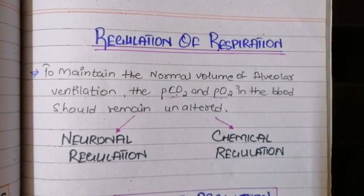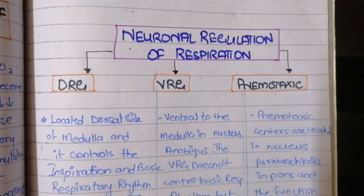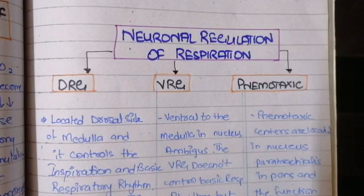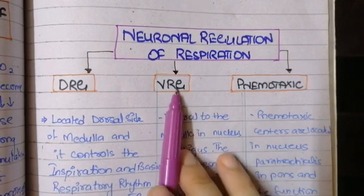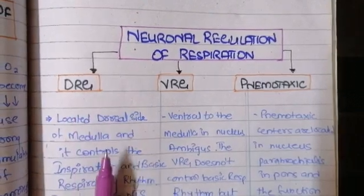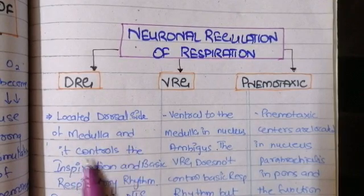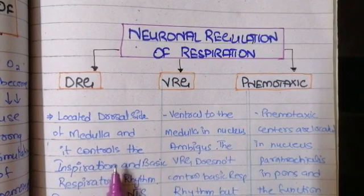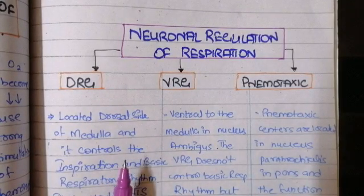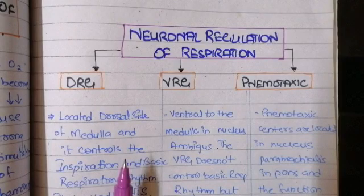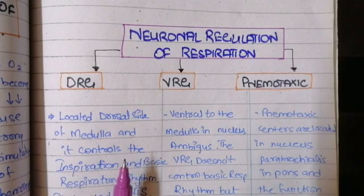Here you can see I have prepared a chart, and in this part we will discuss the neuronal regulation of respiration. The neuronal regulation is controlled through the dorsal respiratory group, the ventral respiratory group, and the pneumotaxic centers. The dorsal respiratory group of neurons is located on the dorsal side of the medulla in the brainstem and controls inspiration, including controlling the inspiratory muscles such as the diaphragm and the intercostal muscles.